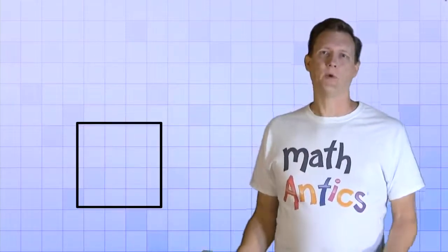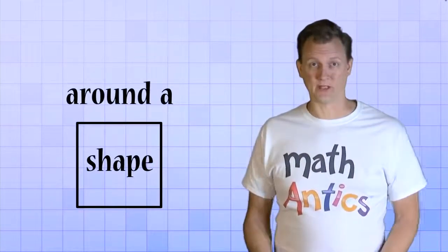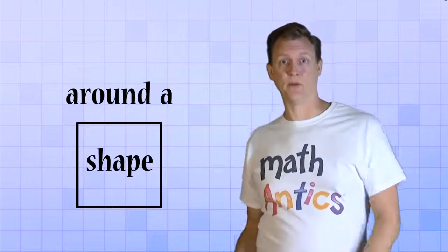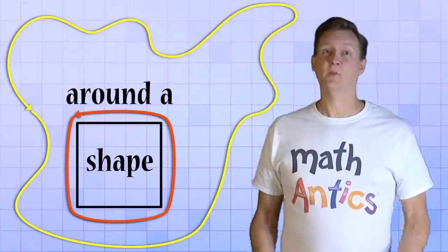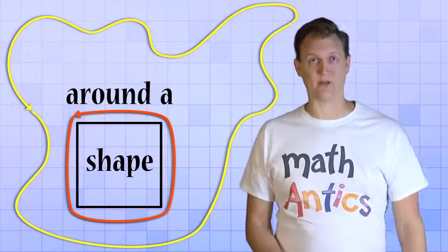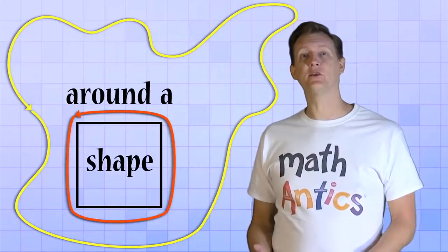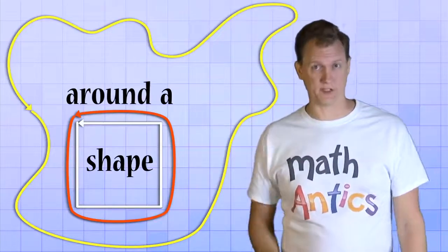But what exactly do we mean by around a shape? It seems like there would be a lot of different ways to go around a shape. Some of them would be short and some of them would be very long. Perimeter means the absolute shortest distance possible around a shape. That would be the distance you'd get if you traced the path exactly around the border or edge of a shape.